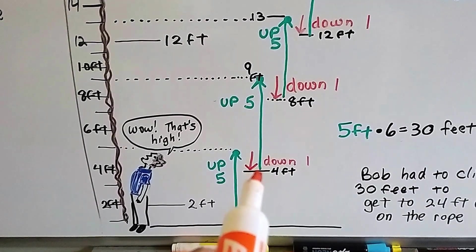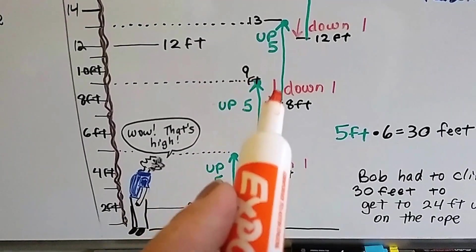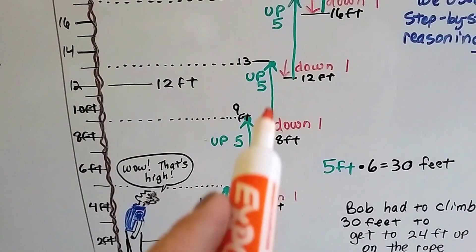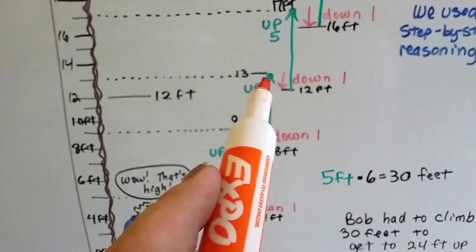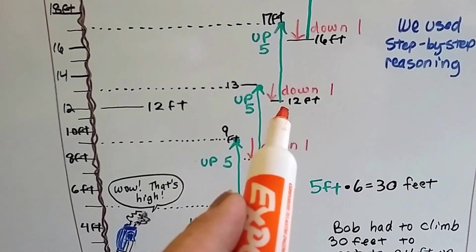From four, he climbed up five. Now he's at nine, but he slipped down one. Now he's at eight. Then he climbed up five. Eight and five is thirteen, but he slid back down one. So he's at twelve.